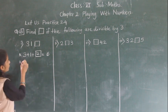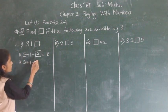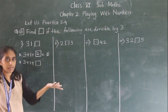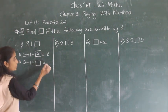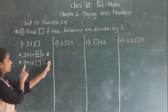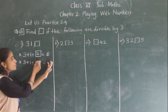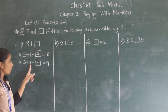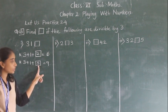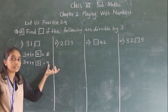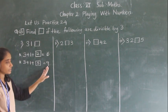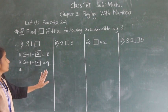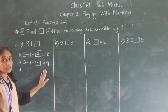Let me show one more. 3 plus 1 gives 4. Now 6 we got already. What is the next multiple of 3? 9. How do we get 9? 3 plus 1 is 4. 4 plus 5 is 9. And if we get a sum of 9, the number is divisible by 3.